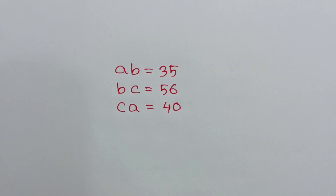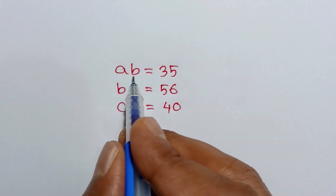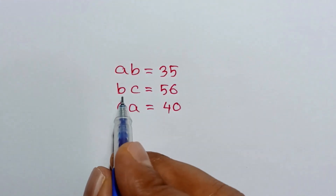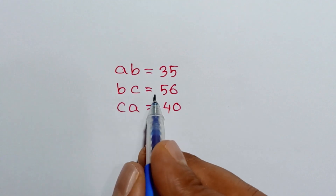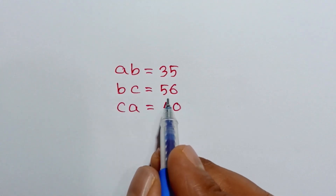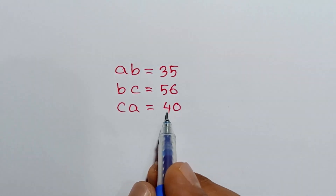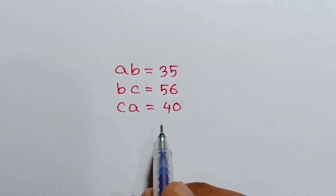Hi everyone. In this video I am going to show how to solve this system of equations: ab is equal to 35, bc is equal to 56, and ca is equal to 40.